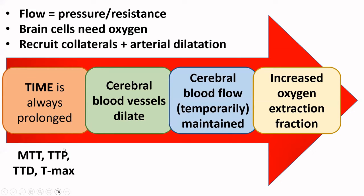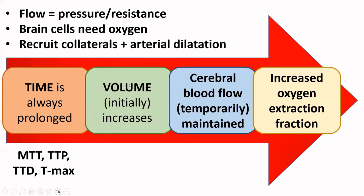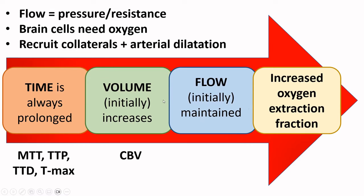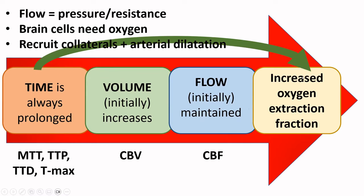All our time parameters — mean transit time, time to peak, time to drain, Tmax — will all increase. Because cerebral blood vessels dilate, the cerebral blood volume will initially increase; the brain tries to compensate by maintaining cerebral blood volume. The cerebral blood flow map is a measure of whether there is sufficient blood supply to the brain — flow will initially be maintained. But this mechanism will only function for a limited amount of time. Because time is prolonged, there is more time for oxygen extraction. This cerebral autoregulation can only maintain things for a short period before the system starts to collapse and cerebral blood flow will eventually decrease.